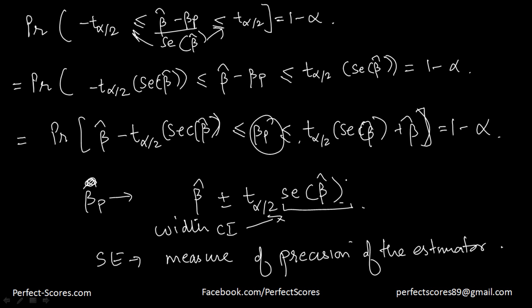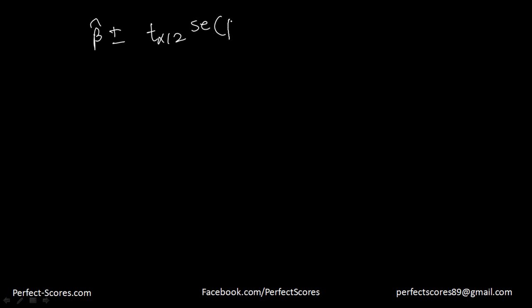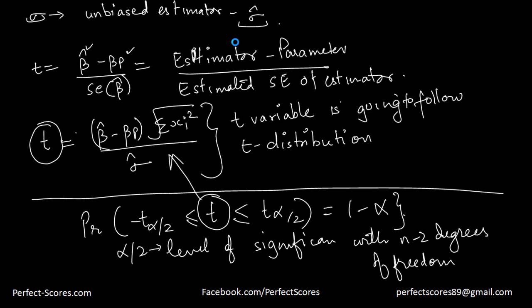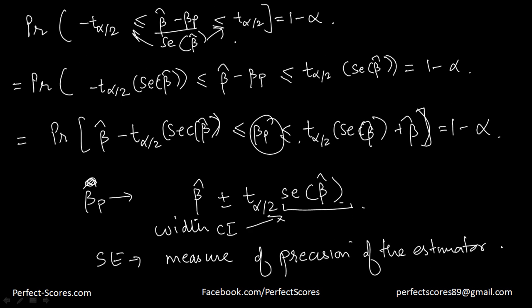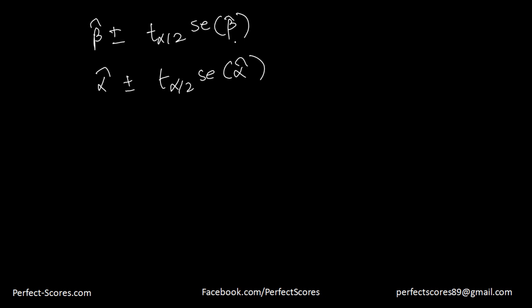Similarly, for beta population the confidence interval is beta hat ± t alpha by 2 × SE(beta hat), and for alpha population it is alpha hat ± t alpha by 2 × SE(alpha hat). These are the confidence intervals for our population parameters in regression analysis.